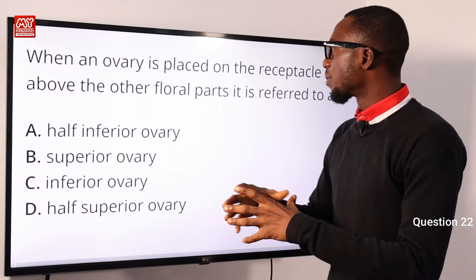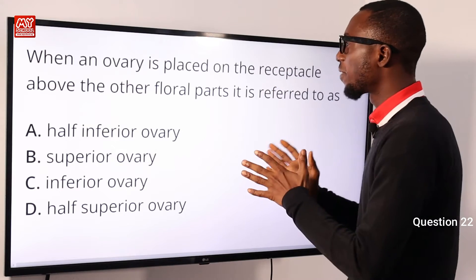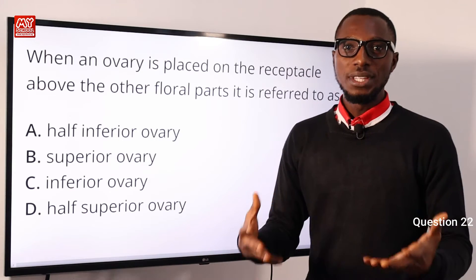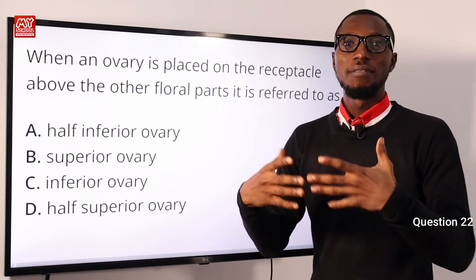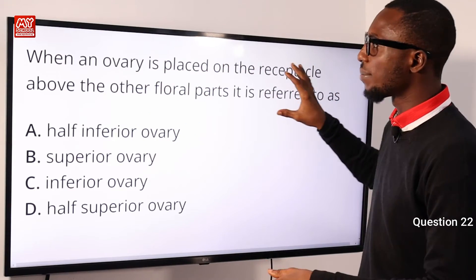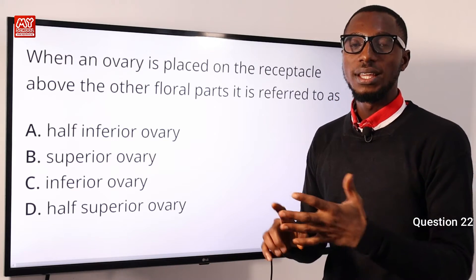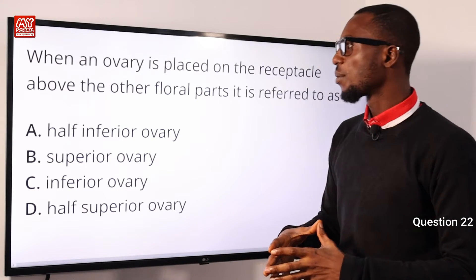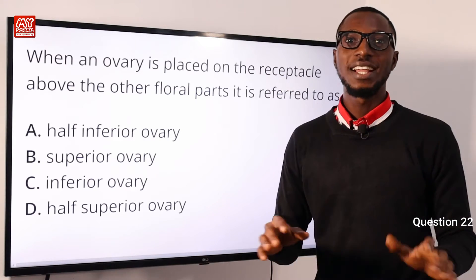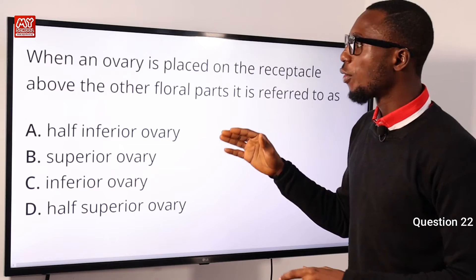Question 22: When an ovary is placed on the receptacle above the floral parts, it is referred to as what? This reminds us of terms like epigynous flowers, perigynous flowers, and hypogynous flowers. We are looking at an ovary placed above the receptacle — above the floral parts such as the stamens, carpels, sepals, and petals. That is a superior ovary or hypogynous ovary.